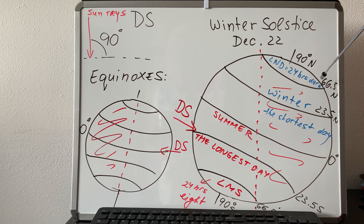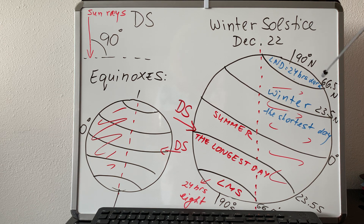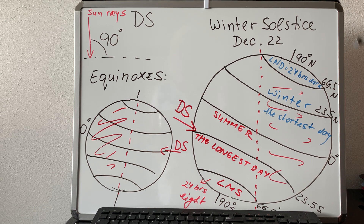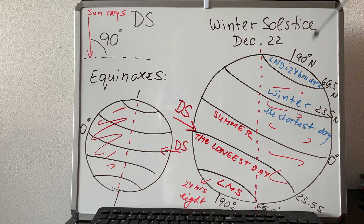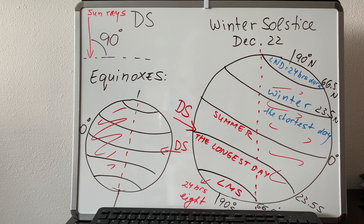The pole area between 66.5 and 90 degrees north will be the land of noontime darkness — 24 hours dark, no sunrise, no light at all on December 22nd. After that day, step by step, the light will move in. But on that day, there is complete darkness.